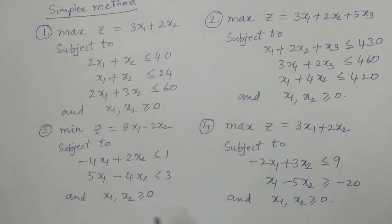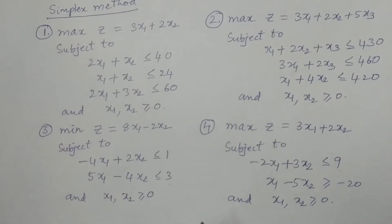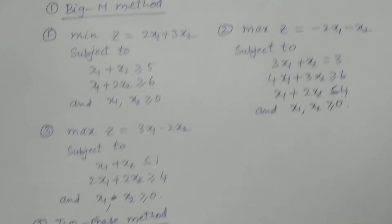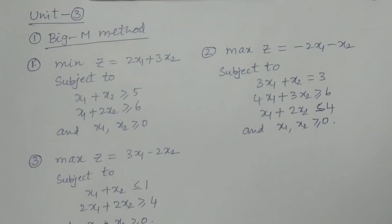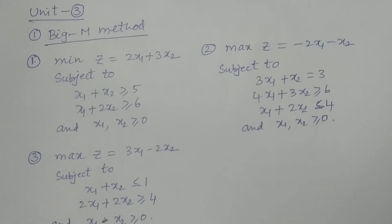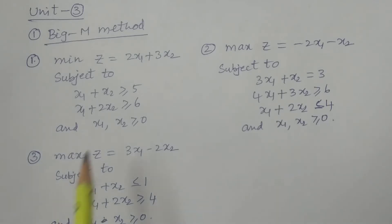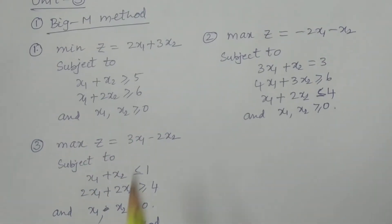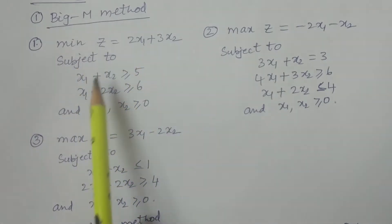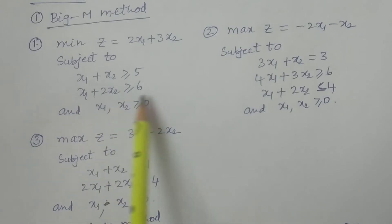These are the problems I suggest for Unit 2 — the simplex method. Moving to Unit 3, there are various methods: Big M, two-phase, degeneracy, and special cases in the simplex method. For the Big M method I suggest three problems. Problem 1: minimize z = 2x1 + 3x2, subject to x1 + x2 ≥ 5, x1 + 2x2 ≥ 6, and x2 ≥ 0.